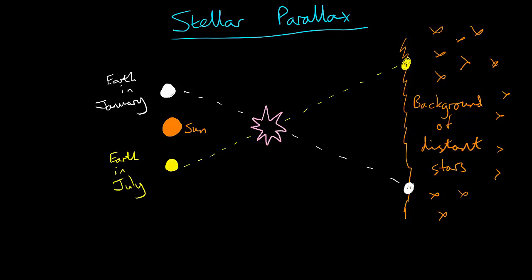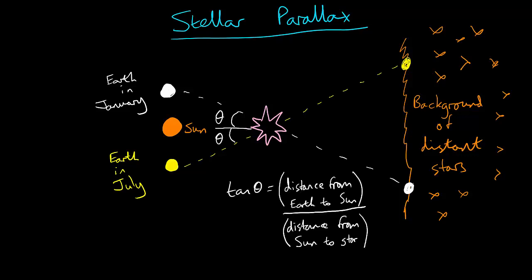Sun, and then compare the position of this star in the two photos. We can now use trigonometry to work out the distance of the star. The tan of theta is equal to the distance from the Earth to the